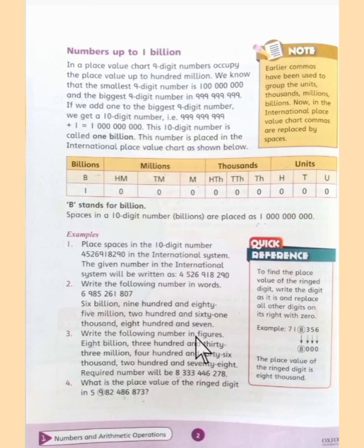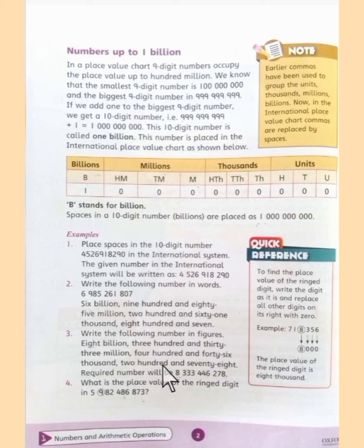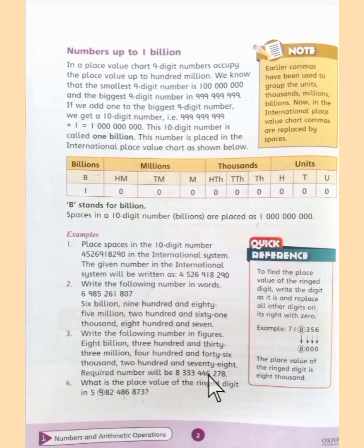The next example is: write the number in figures. The number is given in words and you have to write it in figures. Eight billion three hundred and thirty-three million four hundred and forty-six thousand two hundred and seventy-eight. Note: I said eighty billion earlier — it is eight billion.